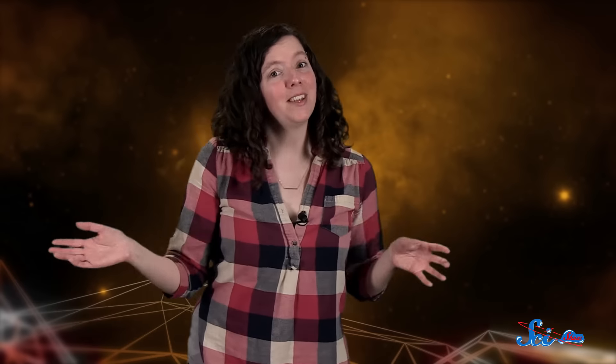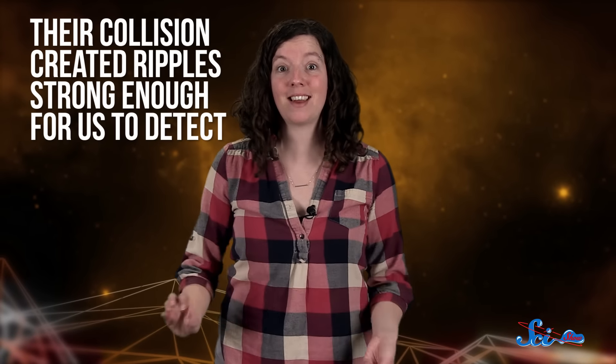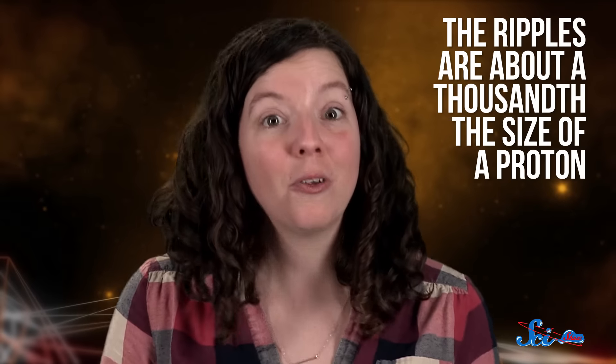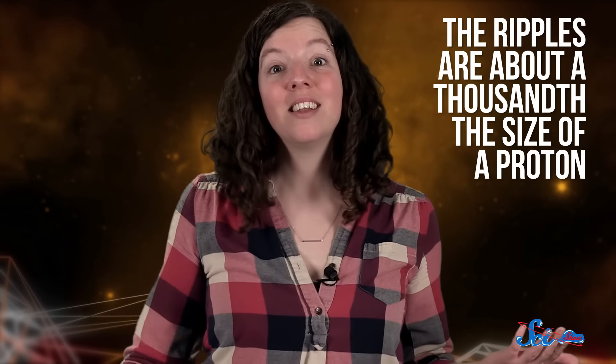Black holes tend to do everything in extremes, and in this case, their collision created ripples in spacetime so strong that we were able to detect them here on Earth. Even those ripples were tiny, we're talking a scale about a thousandth the size of a proton. But the LIGO observatories are precise enough to detect that change.